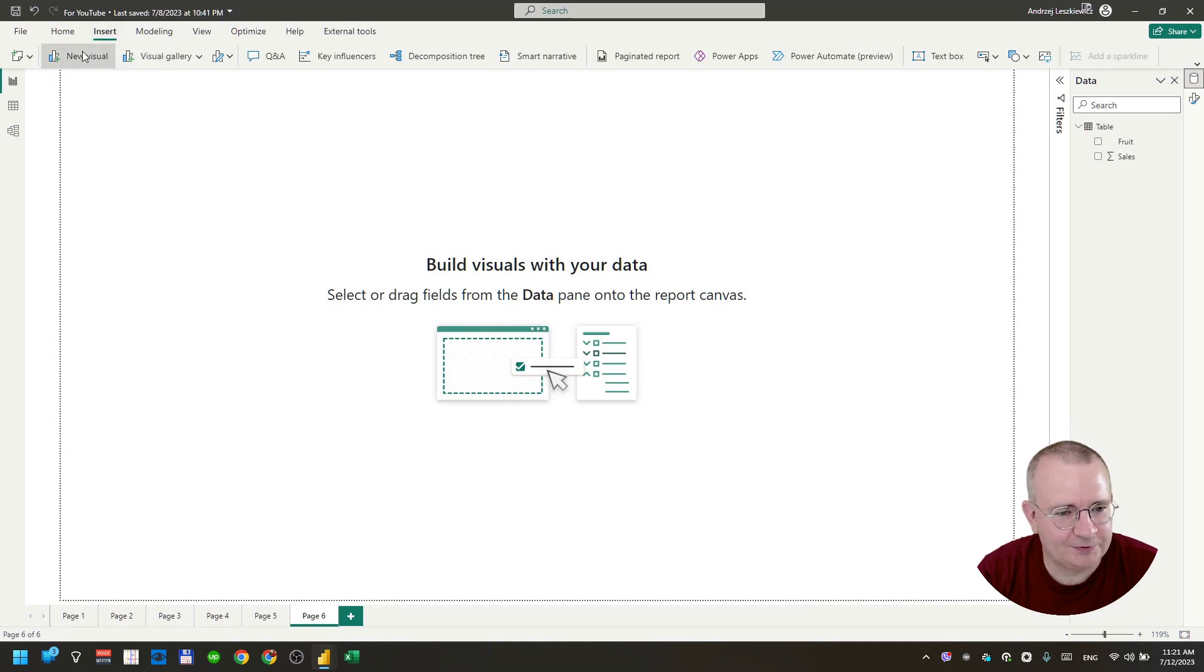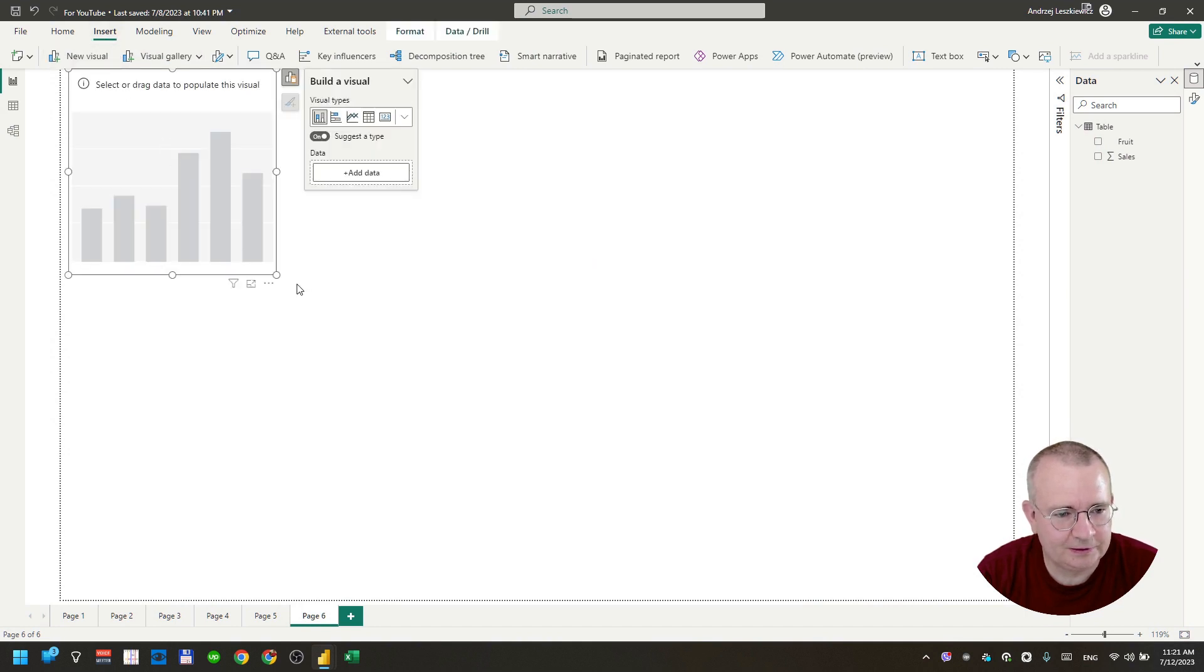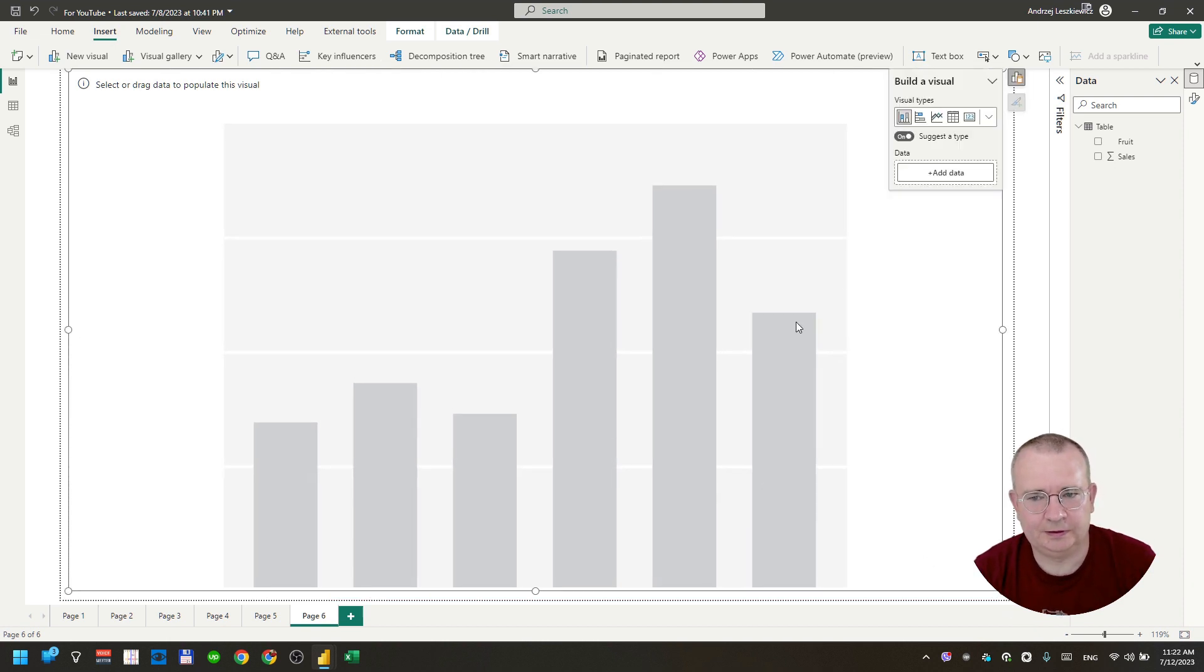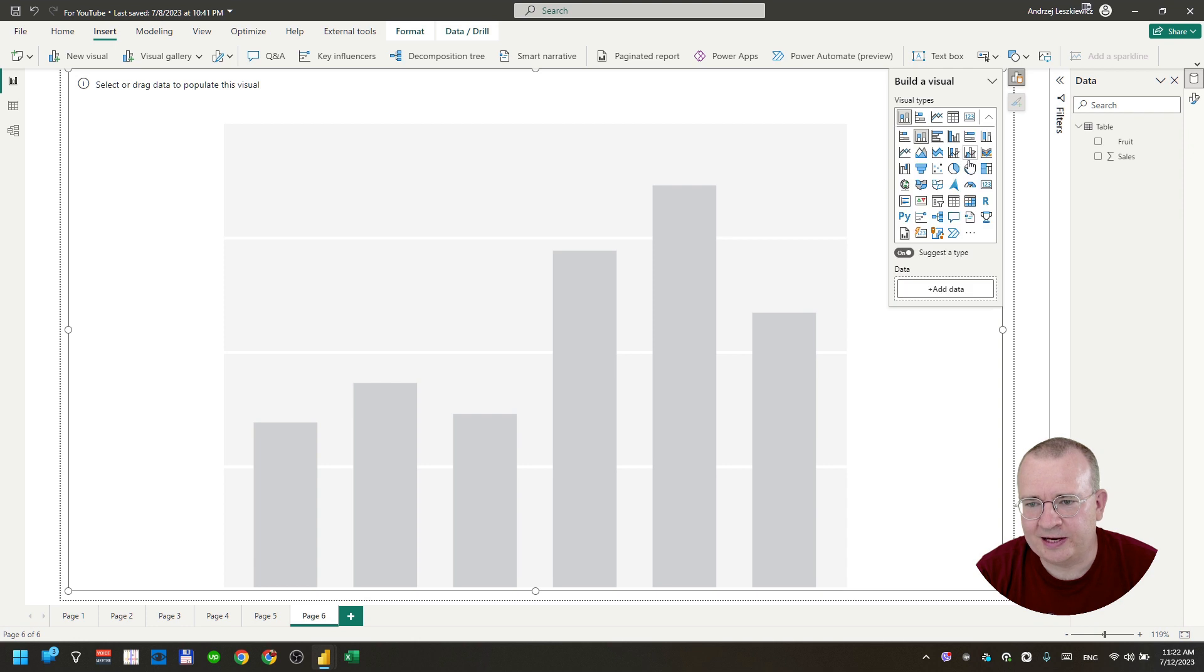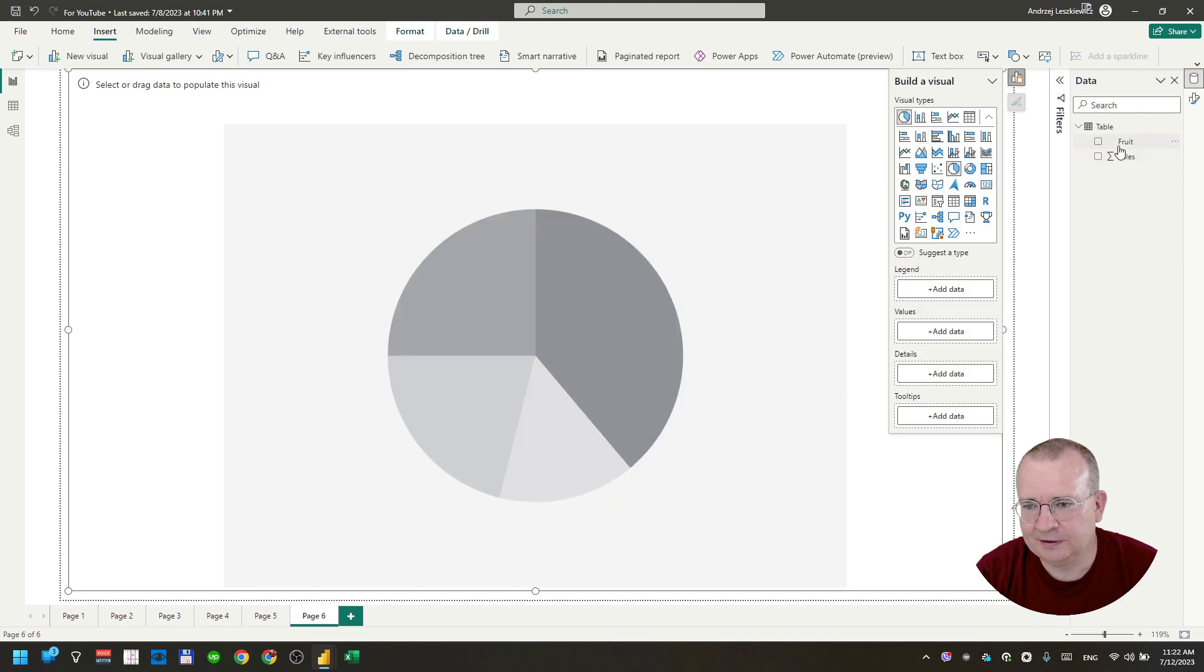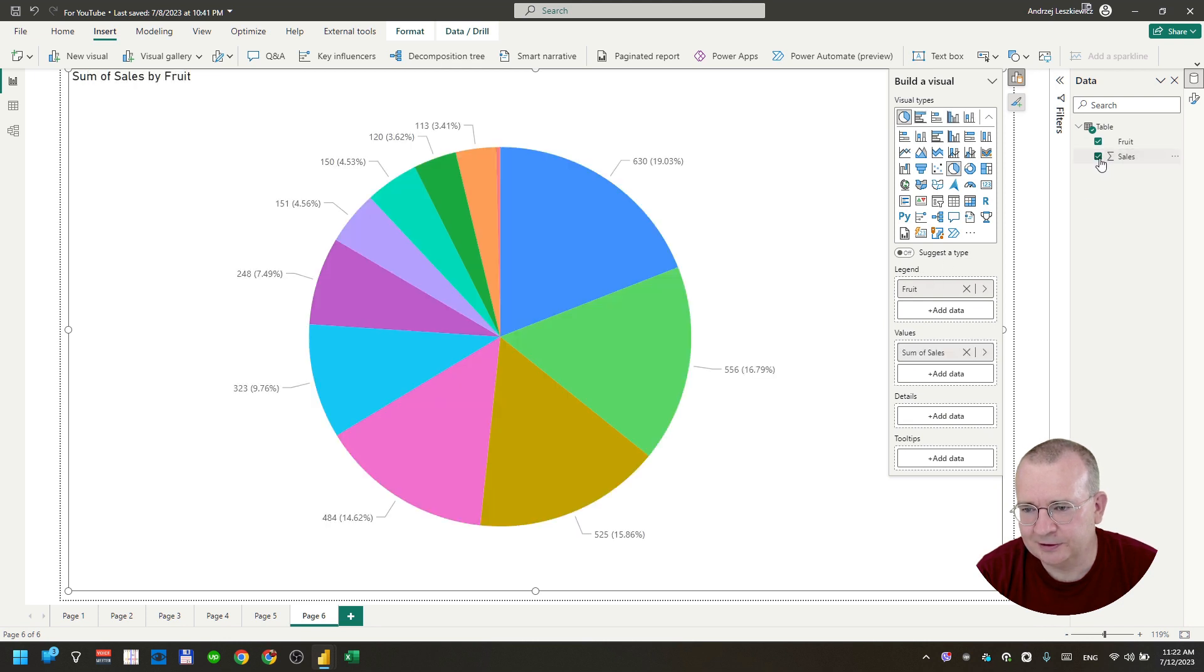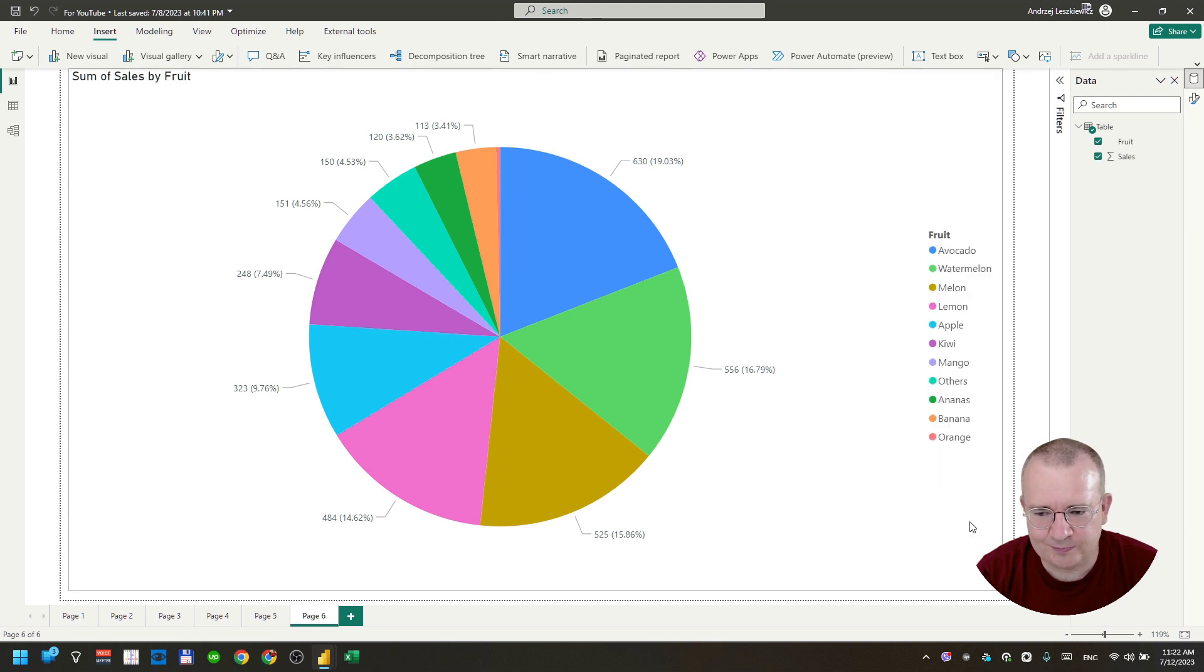Insert a visual. I will increase it. Selecting pie chart here. And adding fruit to the legend field and sales to the values field. And this is our first pie chart.